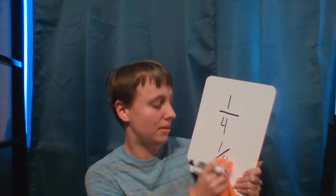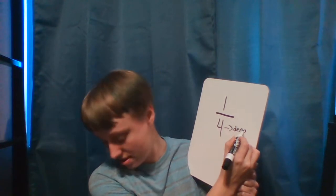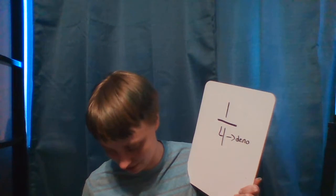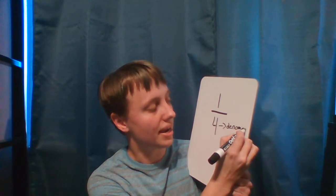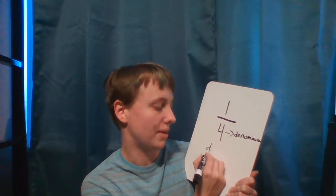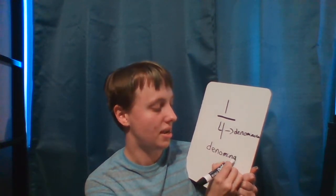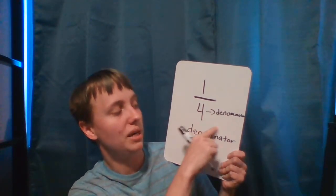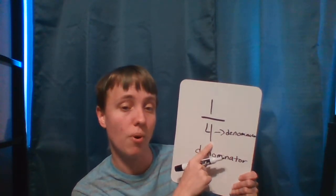So, with this in mind, your bottom number is your denominator — D-E-N-O-M-I-N-A-T-O-R — a super long word. The denominator tells us how many parts make up the whole. So to get a whole, we would need four whole parts in this case.